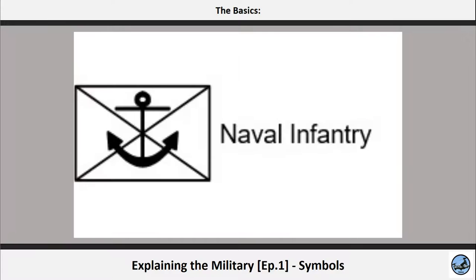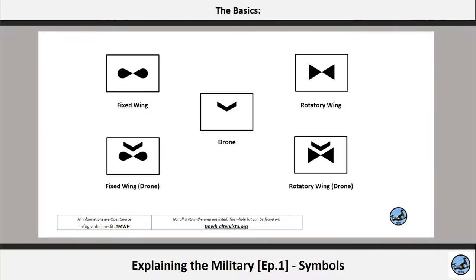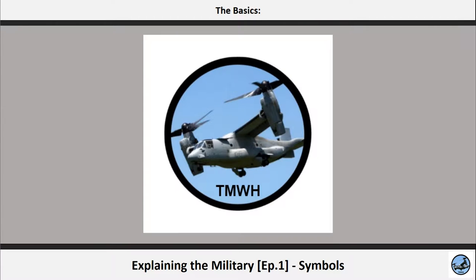Naval forces are represented by an anchor. Fixed-wing air units are represented by the blades of their engine. Rotary-wing air units are similar to fixed ones but the blades are like triangles. Obviously these are not all the possible units, but rather what is very likely that we will use in the future.